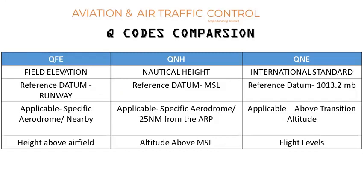To summarize: QFE — field elevation datum, reference datum is the runway, applicable specific to the aerodrome, and it gives height above ground level (AGL). QNH — think of it as nautical height, reference datum is mean sea level, applicable to a specific aerodrome and within 25 nautical miles from the ERP, used below transition level, vertical height expressed as altitude. QNE — international standard, reference datum is 1013.25 hectopascal, applicable above transition altitude, vertical height expressed in terms of flight levels.